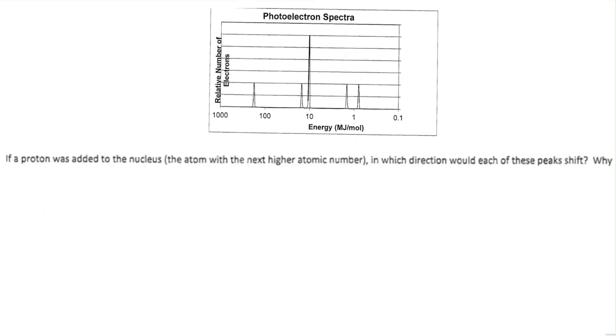If a proton was added to the nucleus, in which direction would each of these peaks shift? So we know that right now we have silicon, which has 14 protons. Let's just put them right here and pretend that this is the nucleus, and then this is the first subshell, second subshell, and third subshell. Thinking of it like this kind of helps me visualize.